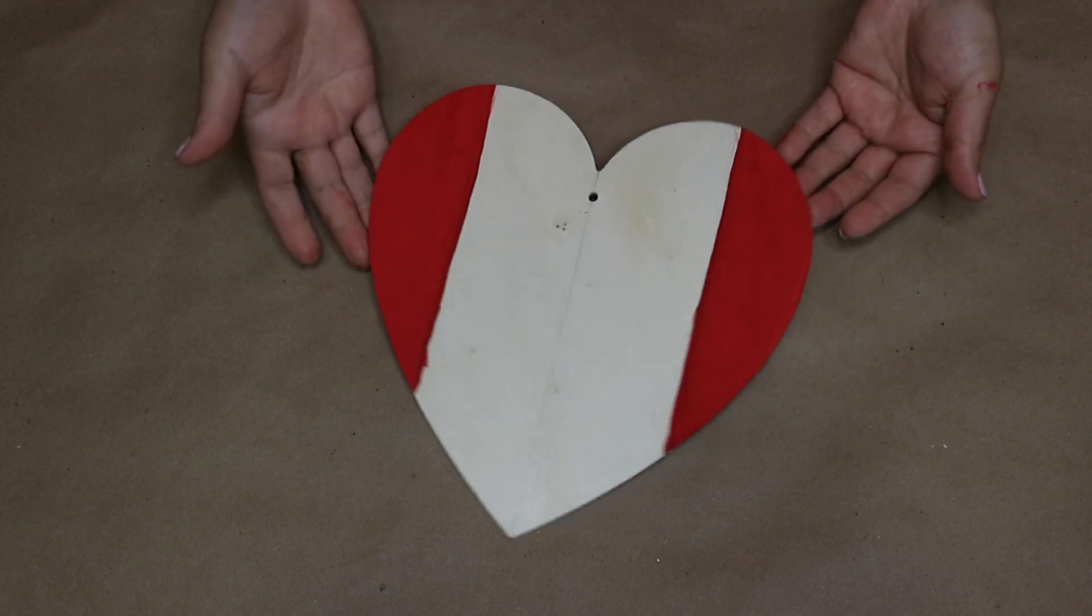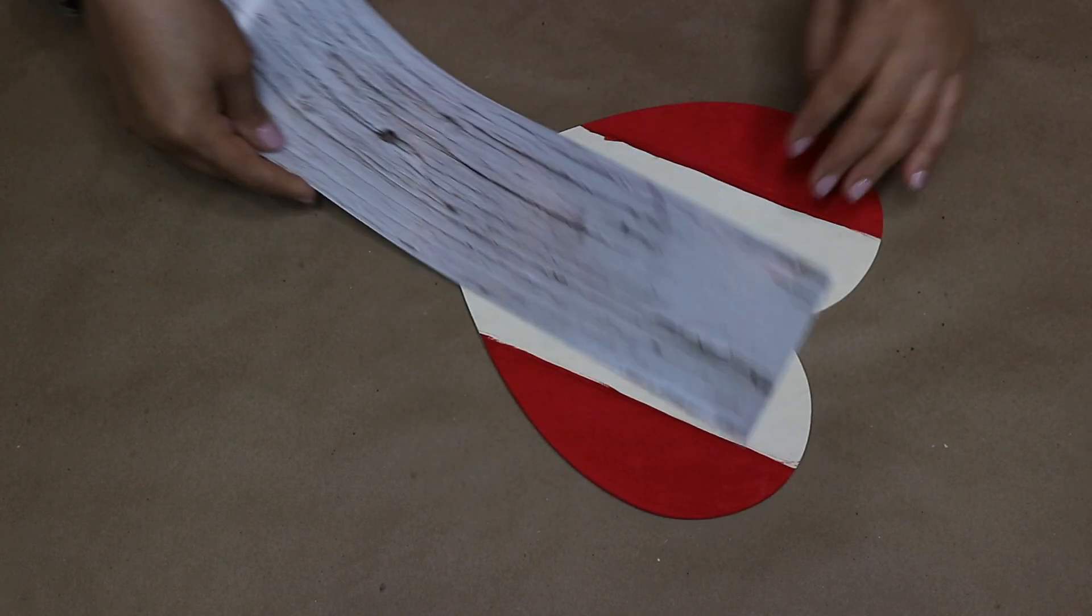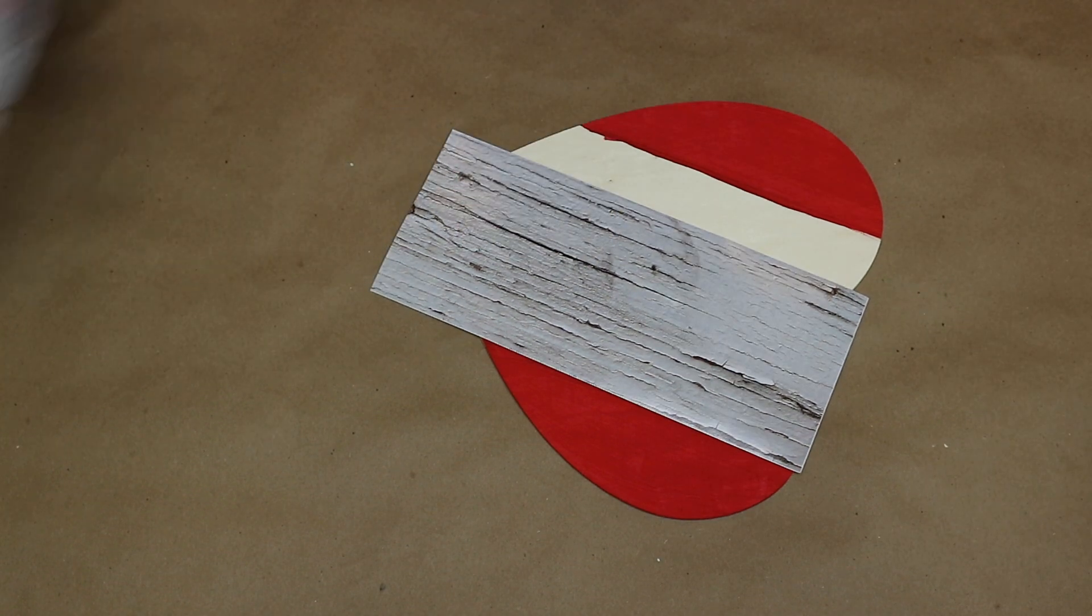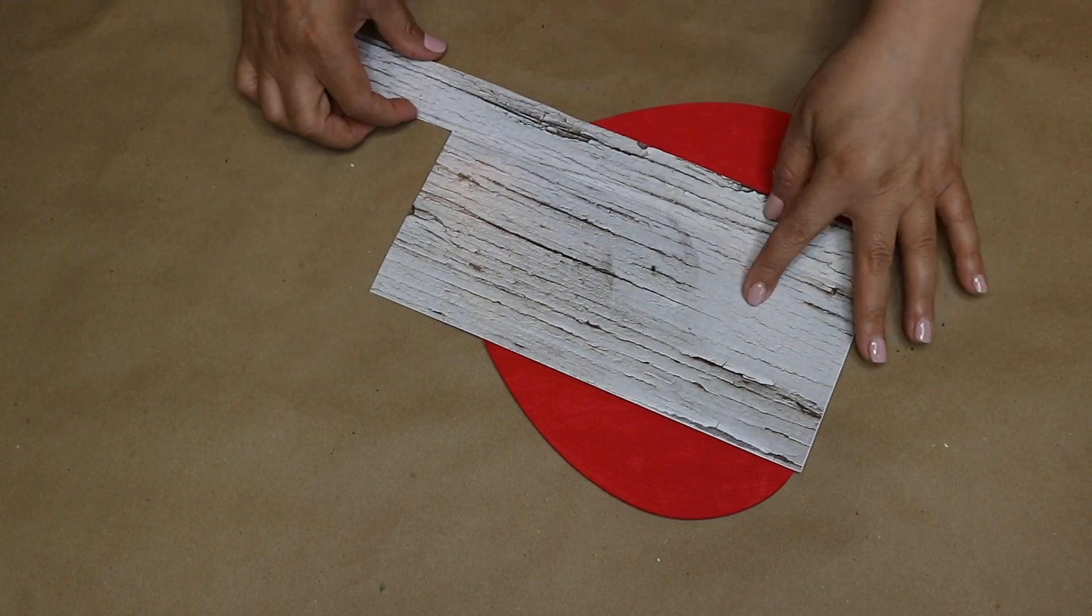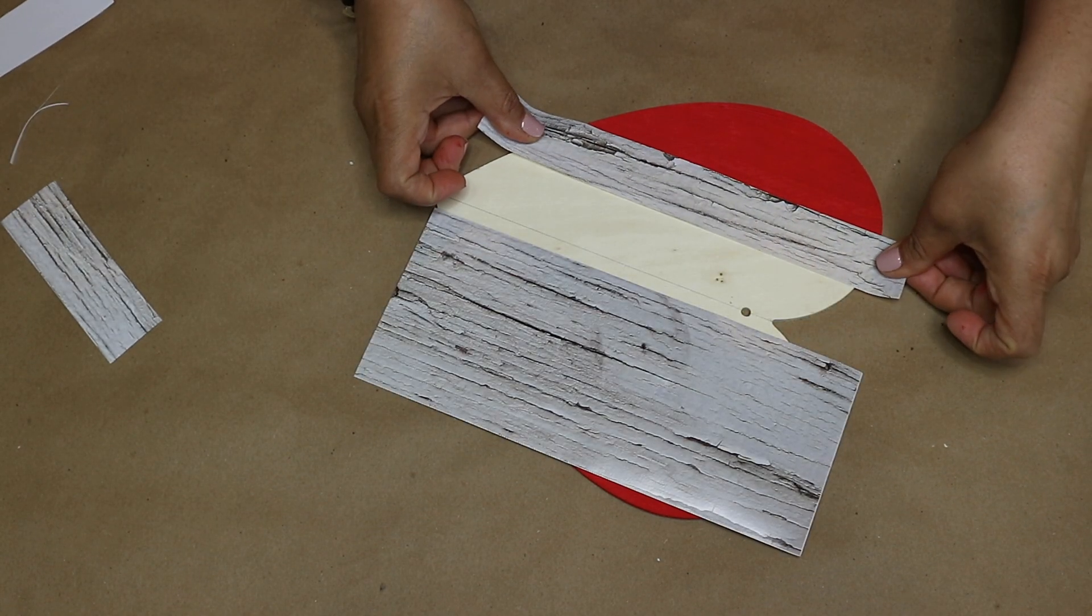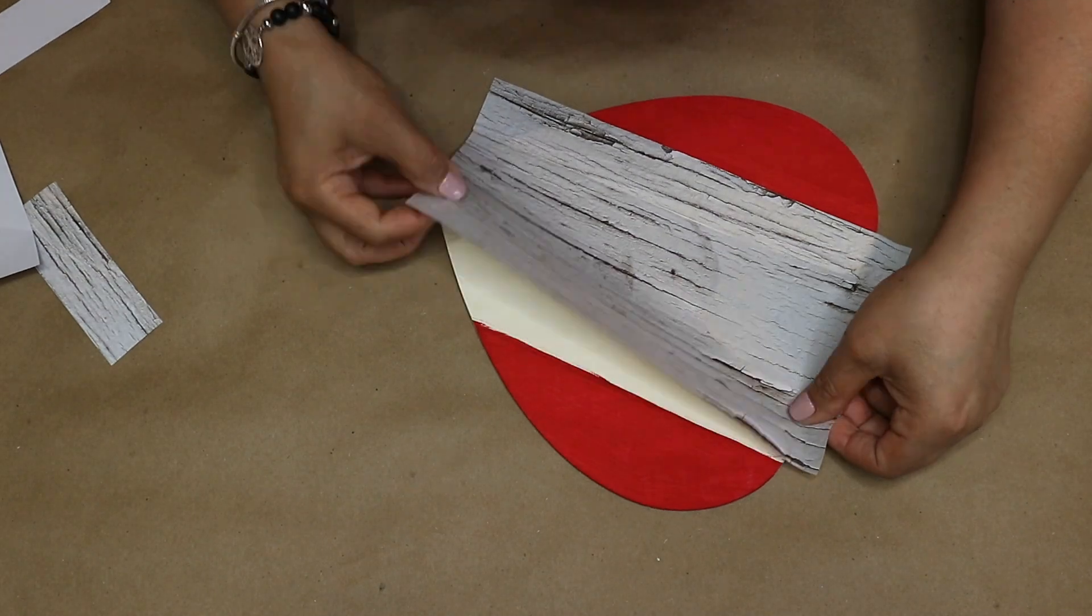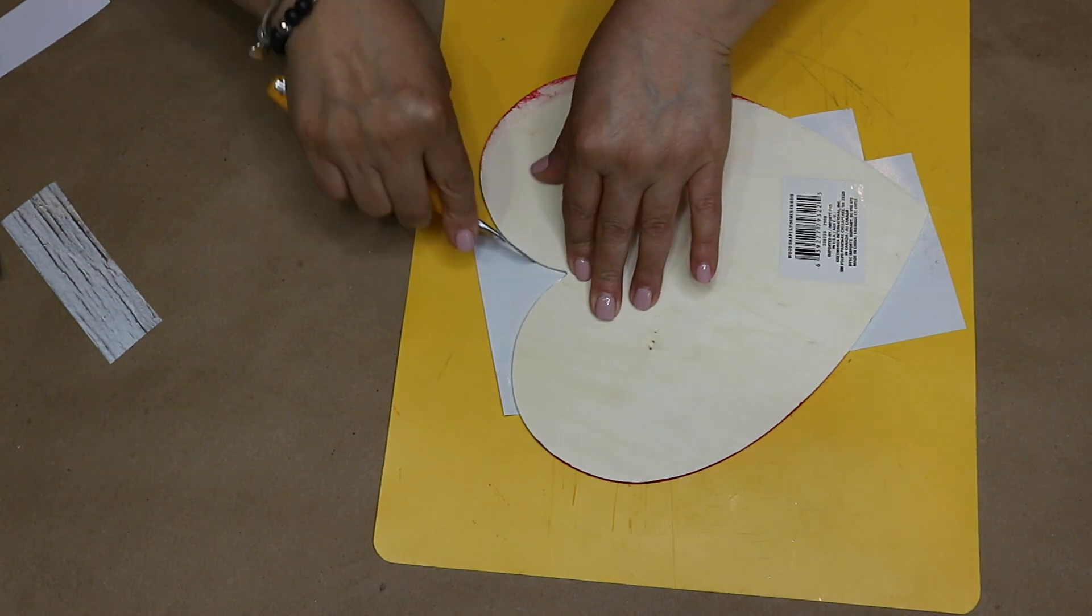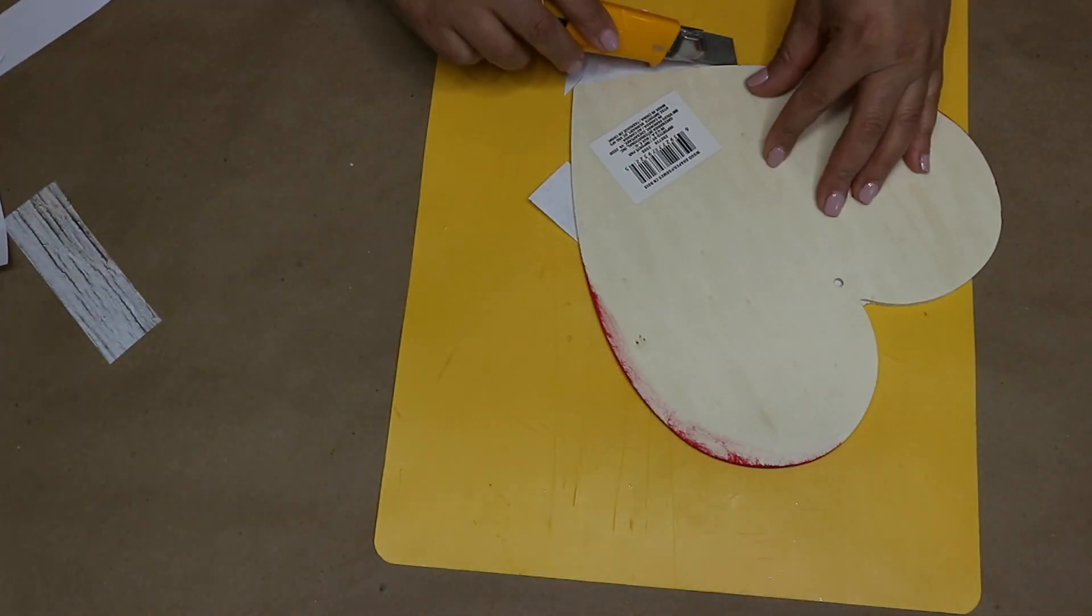And once it's dry, here's how it looks so far. Now I am gonna measure to see how much I need to cover the middle part, then I cut it out and then I peel off the back and adhere it to the wood. Then I cut any excess out using my crafting knife.